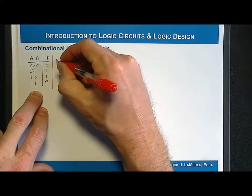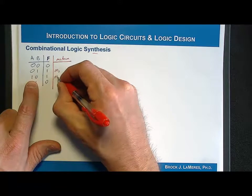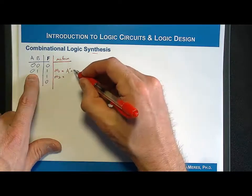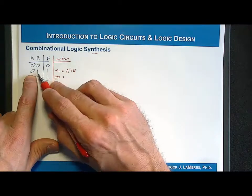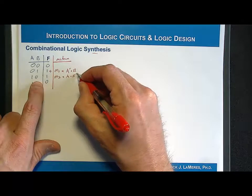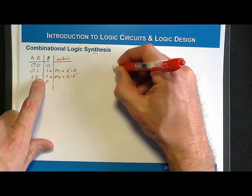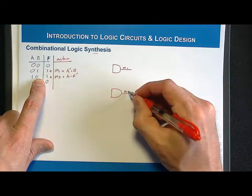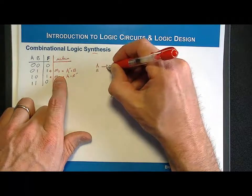We're going to synthesize a truth table that looks like an exclusive-OR function — 0,0→0 / 0,1→1 / 1,0→1 / 1,1→0 — using only inverters, AND gates, and OR gates. I write a min term for each row with output 1: row 1 gives A̅·B, and row 2 gives A·B̅. Then I draw the circuit: for min term 1 (M1), A goes through an inverter and B comes straight in; for min term 2 (M2), A comes straight in and B goes through an inverter.